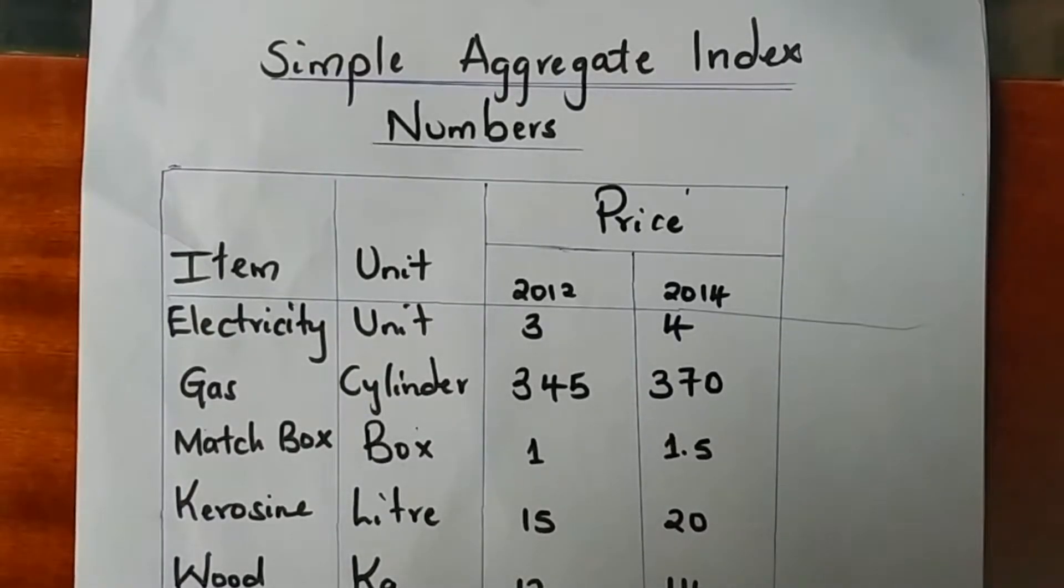Simple aggregate index numbers. This type of index numbers are unweighted.